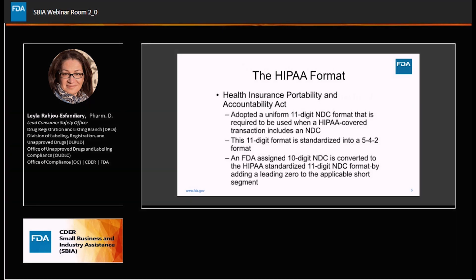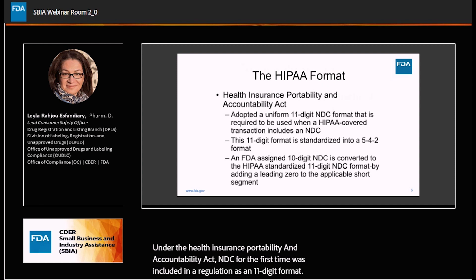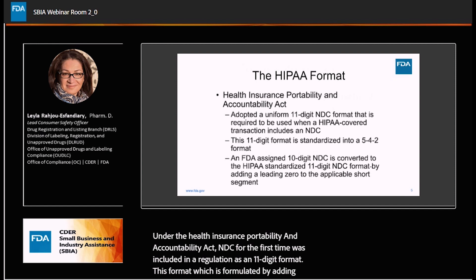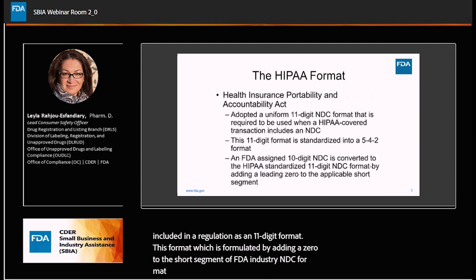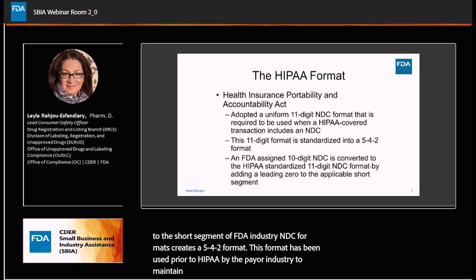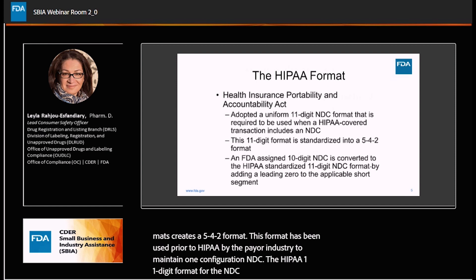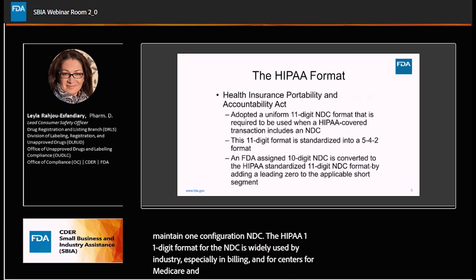Under the Health Insurance Portability and Accountability Act, NDC for the first time was included in a regulation as an 11-digit format. This format, formulated by adding a leading zero to the short segment of FDA's three NDC formats, creates a 5-4-2 format. This format has been used prior to HIPAA by the payer industry to maintain a one-configuration NDC. The HIPAA 11-digit format for the NDC is widely used by industry, especially in billing and for the Centers for Medicare and Medicaid Services drug rebate program.